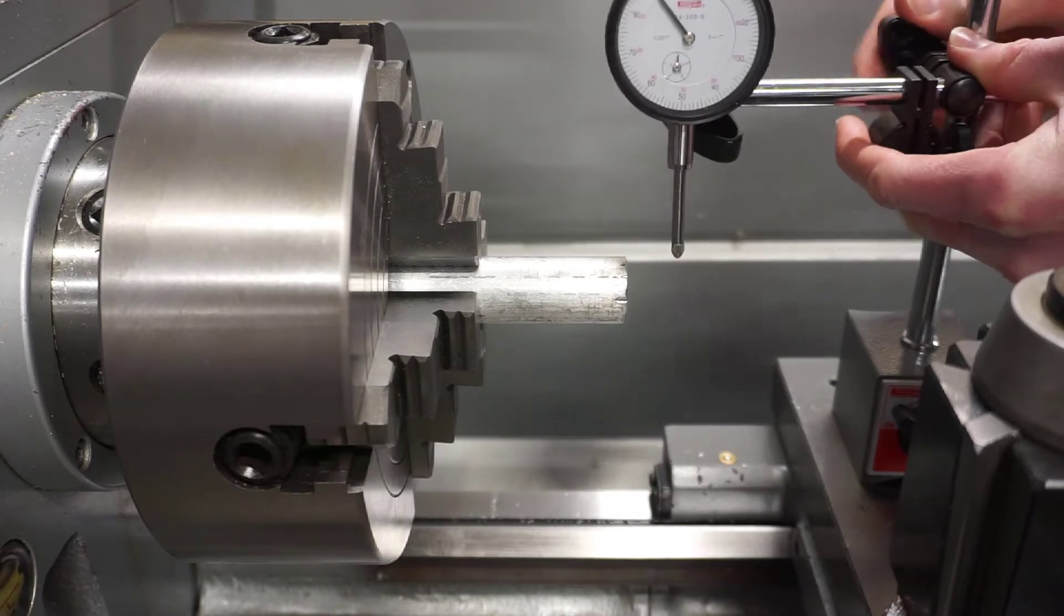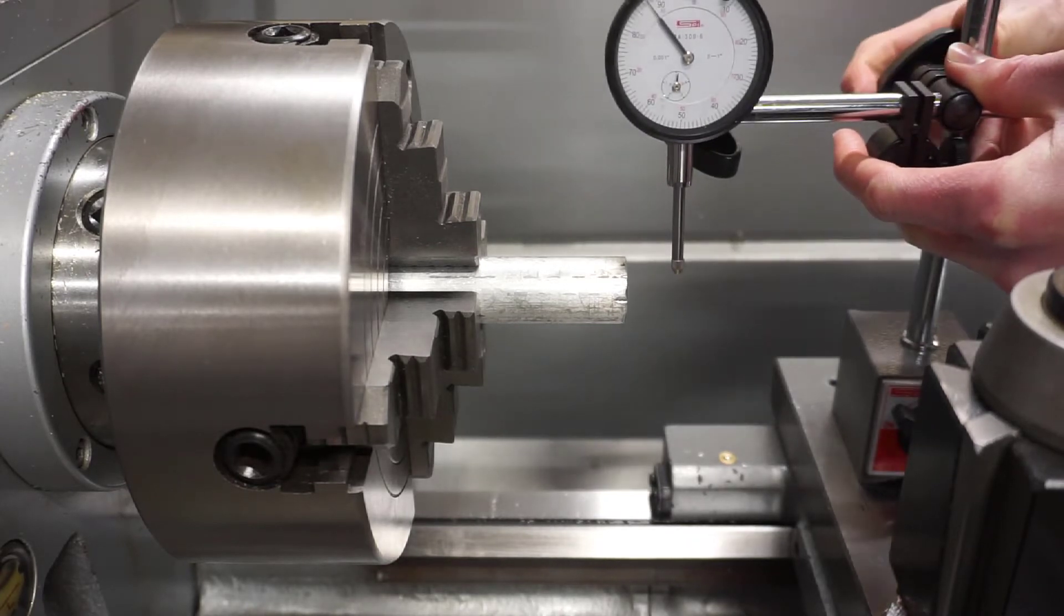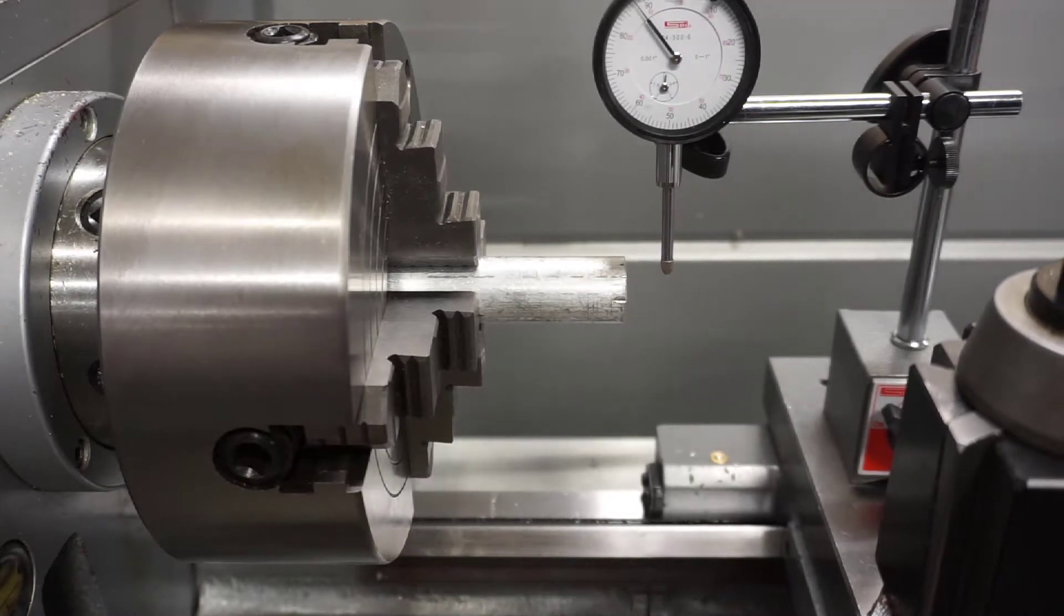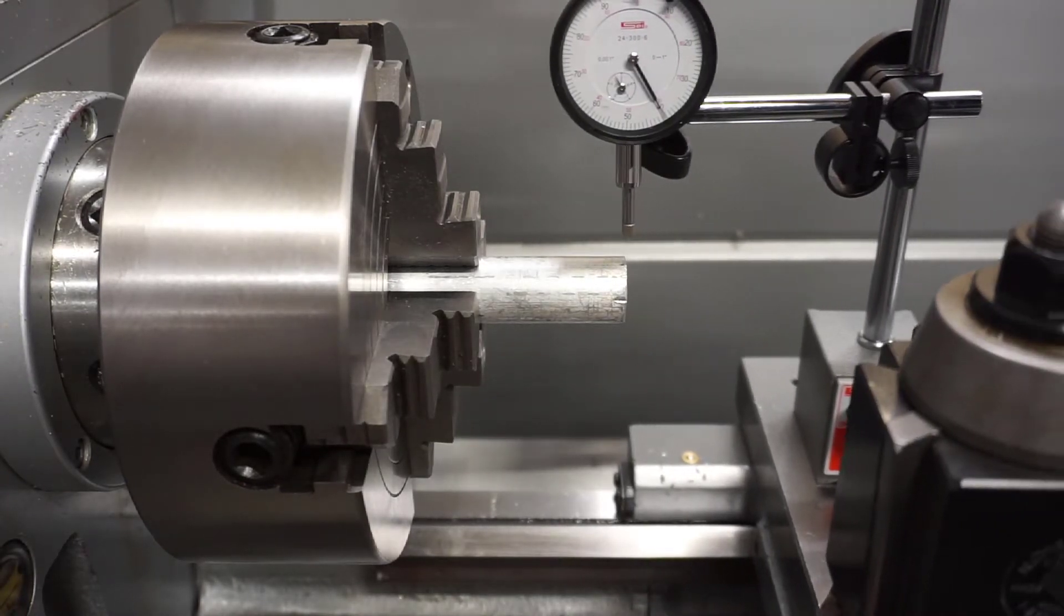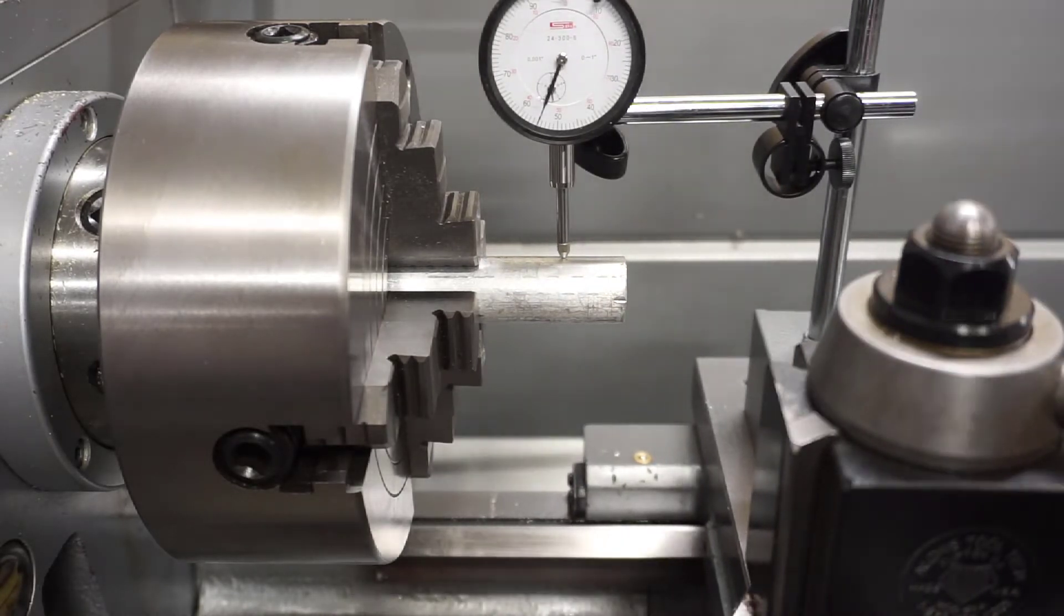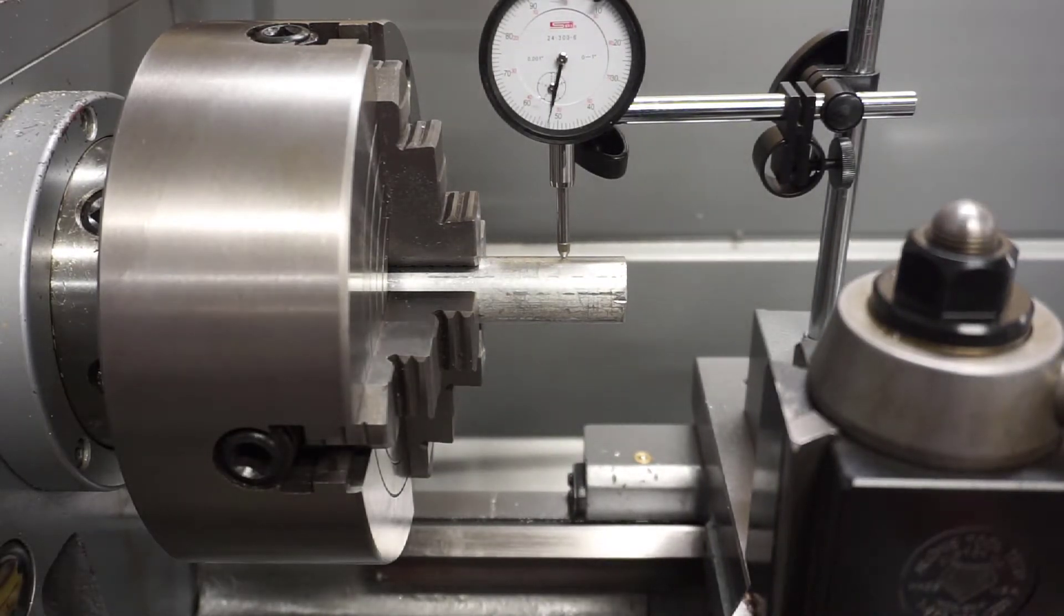With it adjusted and firmly held in place, lift the tip, bring it over the part as you move, in this instance, the carriage to the left. Release your dial indicator tip, and now we're going to want to find the apex of the part, or the absolute top.